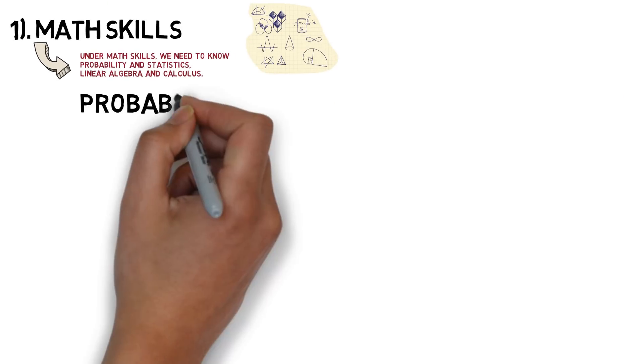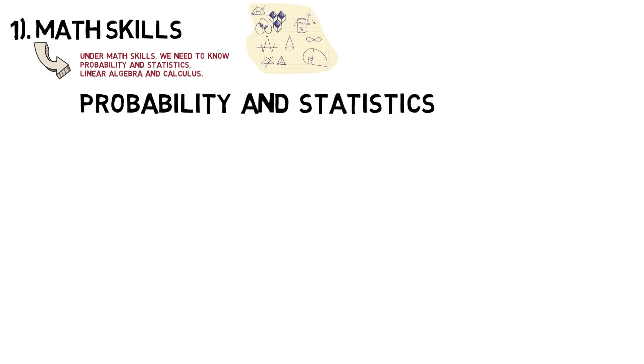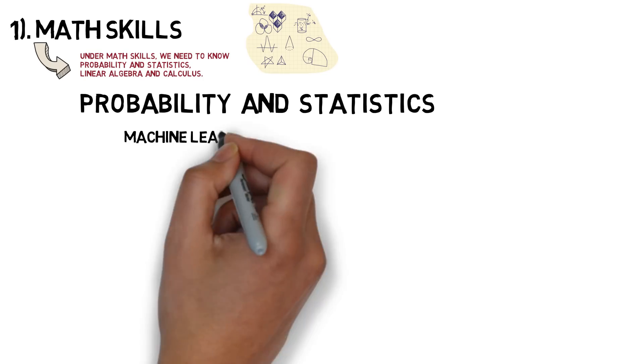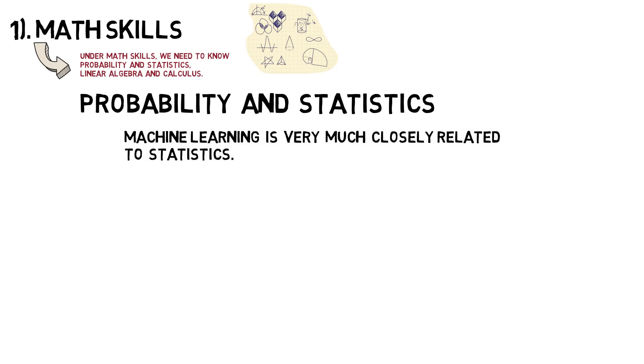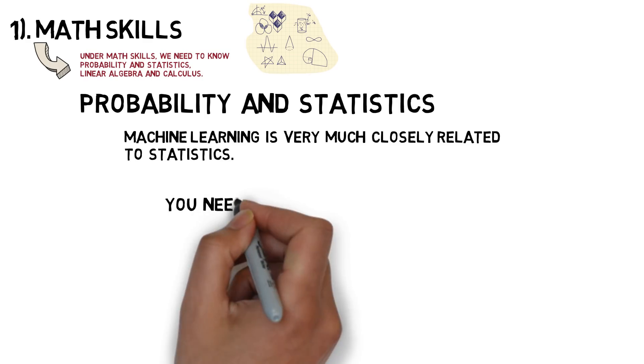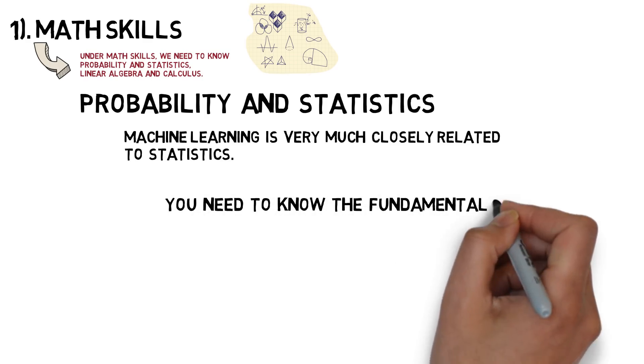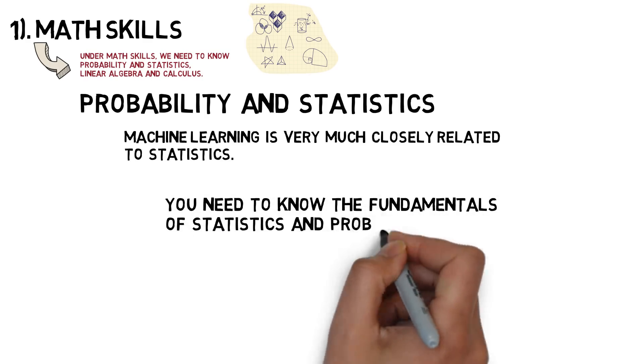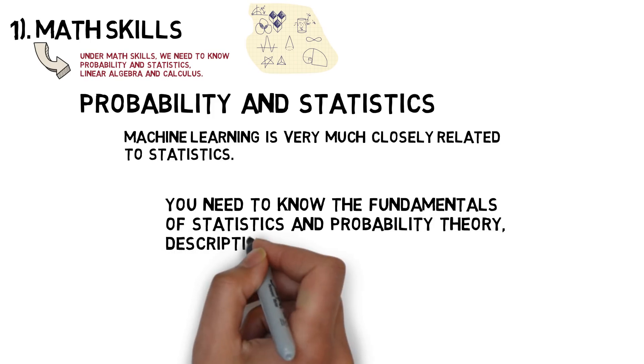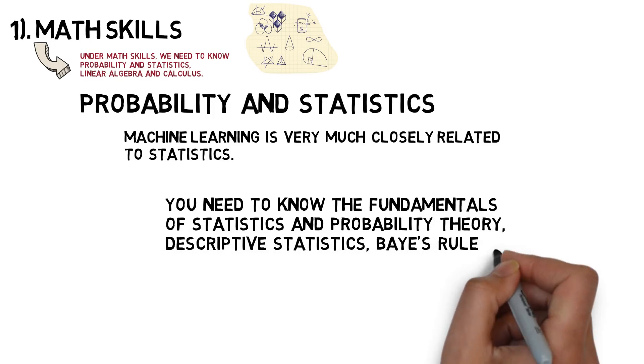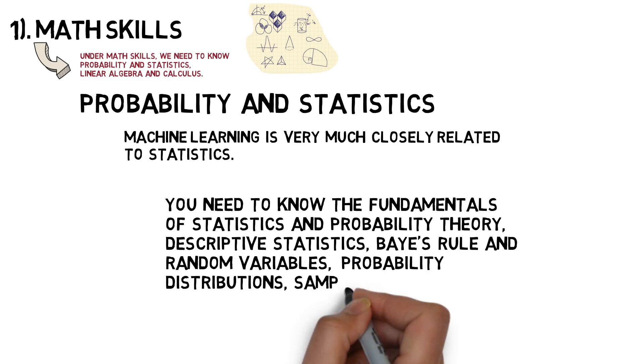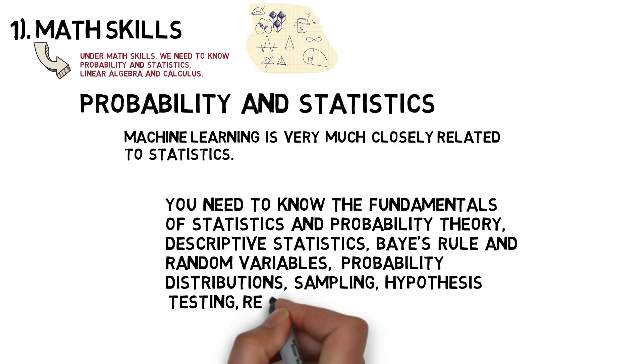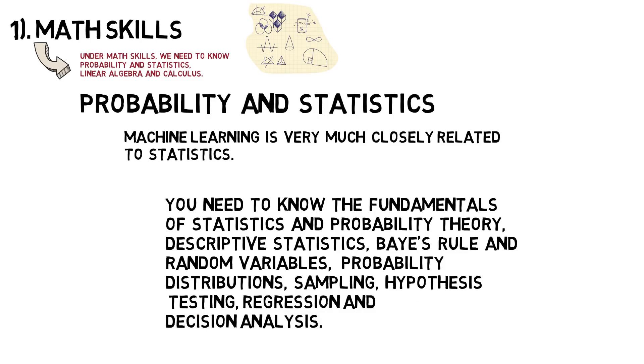Probability and statistics: Machine learning is very closely related to statistics. You need to know the fundamentals of statistics and probability theory - descriptive statistics, Bayes rule and random variables, probability distributions, sampling, hypothesis testing, regression, and decision analysis.